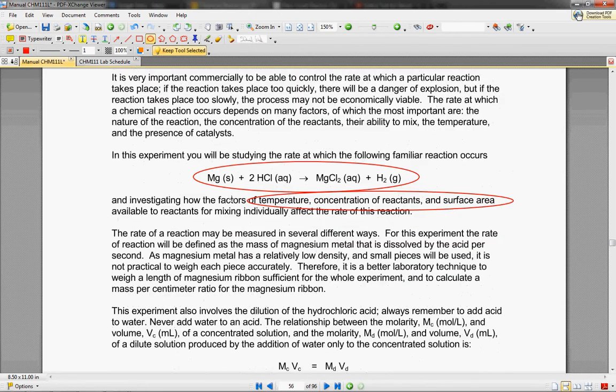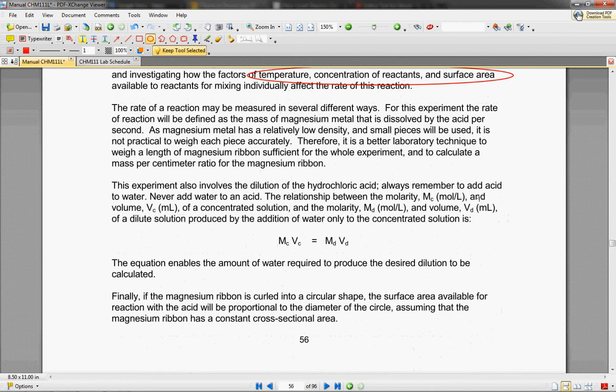The reaction that we're going to be using is magnesium with hydrochloric acid, and we're going to be looking at how temperature, concentration of reactants, and surface area affect the rate of reaction.